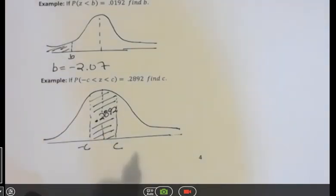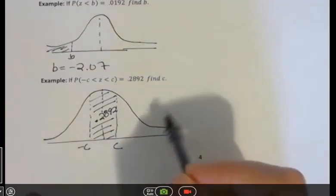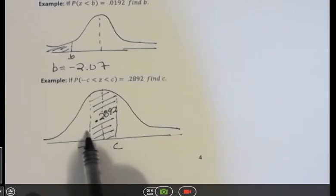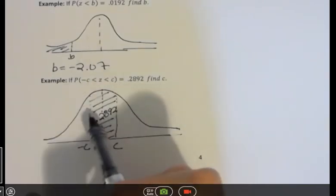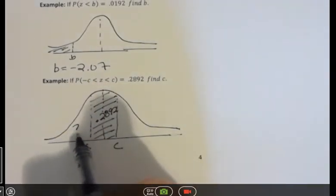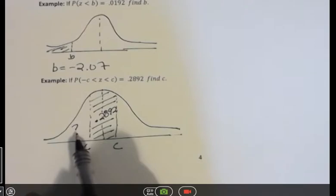But remember, my calculator is finding things to the left. So what I really want to do is find out what this area over here is, and then I can put that in to find this value, and then I can make it positive to find the C value.